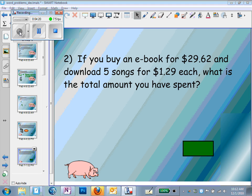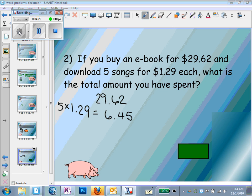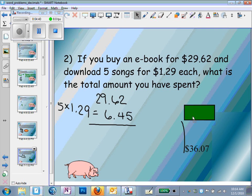If you buy an e-book for $39.62 and download five songs for $1.29 each, what is the total amount of this purchase? So we added the price of the e-book to five times $1.29, and we ended up with $46.07 for our total price.